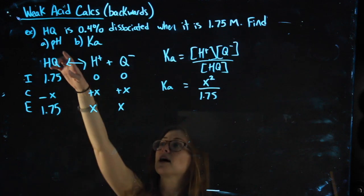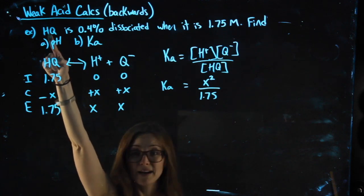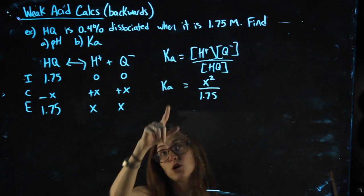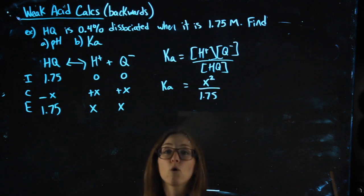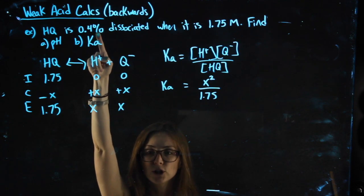And then I realize that because HQ is made up, it's not on the chart. I don't have a KA value I can plug in. So I started the same way, but then I realize the only other piece of information I have is its percent dissociation.